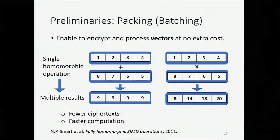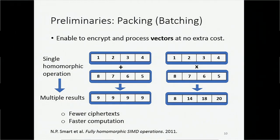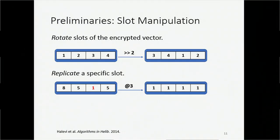Next, I will talk about the packing technique used in our research. The packing technique allows us to put a bunch of integers — instead of just one integer — into one single ciphertext. This blue box indicates the ciphertext and we have a vector inside it. More importantly, a single homomorphic operation on this ciphertext can give us multiple results at no additional cost. This packing technique helps us reduce the number of ciphertexts and gives us much faster computation. We can also homomorphically rotate an encrypted vector and homomorphically replicate a specific location of an encrypted vector.